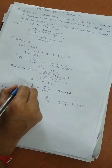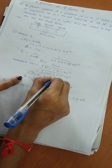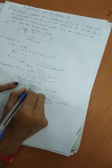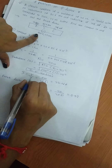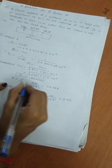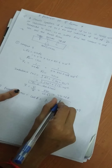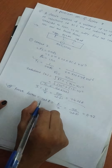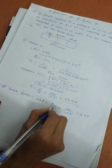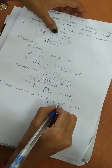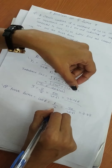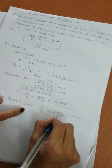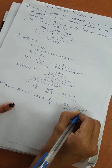Then we find current. I is equal to V by Z. The value of voltage is 500 volt and the value of impedance is 20.61. Therefore, the answer of current is 24.26 ampere. Next, we find power factor. The formula of power factor is cos phi equal to R by Z. The value of resistance is 20 and the impedance value is 20.61. Therefore, the power factor is 0.97.